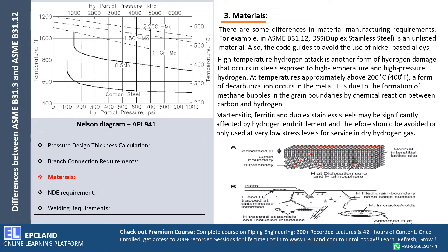There are also differences with respect to material selection. The Nelson curve in API 941 helps us select materials where hydrogen service is used. Up to 200 degrees Celsius, carbon steel is allowed, but when the temperature increases there is a requirement for different materials. The Nelson diagram talks about selection of materials with respect to hydrogen services.